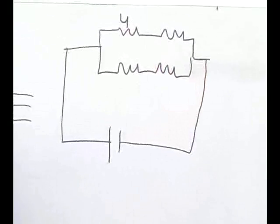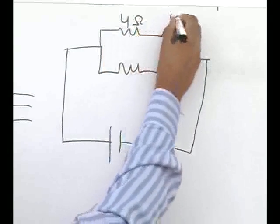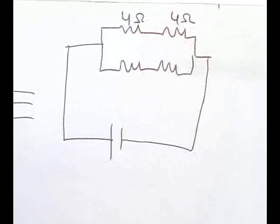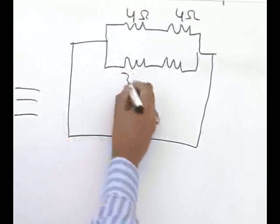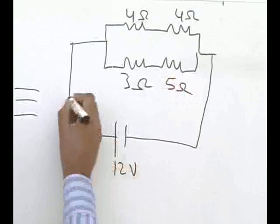So, 6 and 12, if you combine using this formula, you get a 4 ohm resistance. Here there is a 4 ohm resistance as well. This is a 3 ohm resistance, this is a 5 ohm resistance, and there is a 12 volt battery.